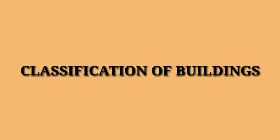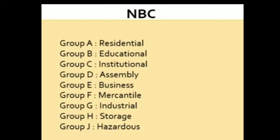The classification of buildings is mentioned in both the National Building Code and KMBR, according to the use or occupancy. As per the National Building Code, the occupancy classification includes Group A, Group B, Group C, Group D, Group E, Group F, Group G, Group H, and Group J.